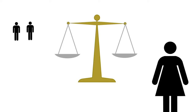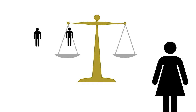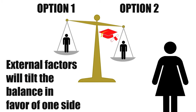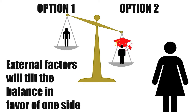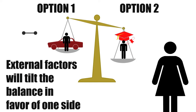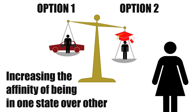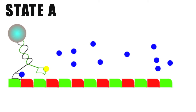Imagine this analogy. A girl needs to decide between two guys to date. Both are equally good looking. One has a university degree. The other owns a car, plus is in good shape. Now, it's clear that they're no longer equal. The balance tilts in favour of one guy. Molecular motors work in a similar way.